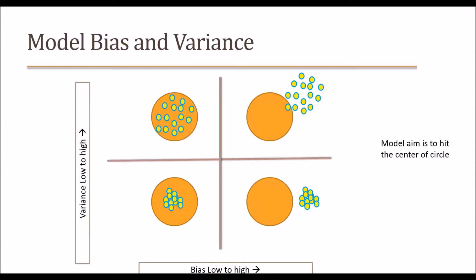So how do we understand variance and bias in an easy way? Look at these four diagrams. In the bottom left one, if our aim is to hit the center of the circle — meaning using the model we want to predict the center — and if we are putting all predictions near the center, that is the model with low bias and low variance. Now the bottom right diagram: this model has very high bias but low variance. All the points we are hitting are very nearby to each other, but they are not near the center. That is high bias, low variance.